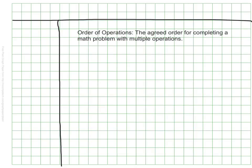But we call that order the order of operations. The order of operations that they decided upon is the agreed order for completing a math problem with multiple operations. You will also hear me refer to it as something called PEMDAS.